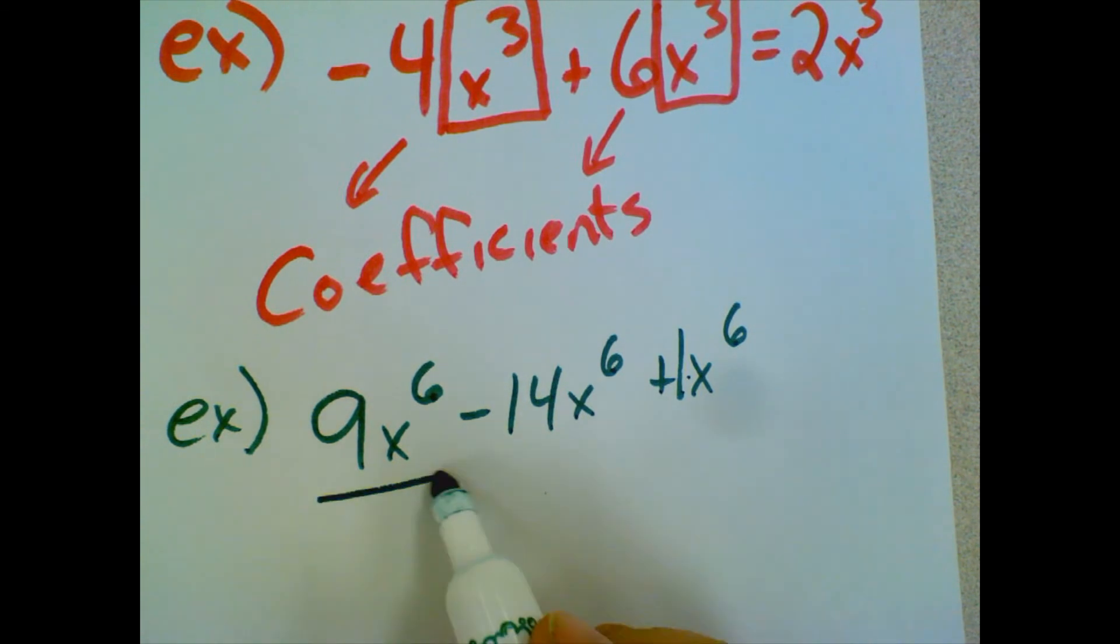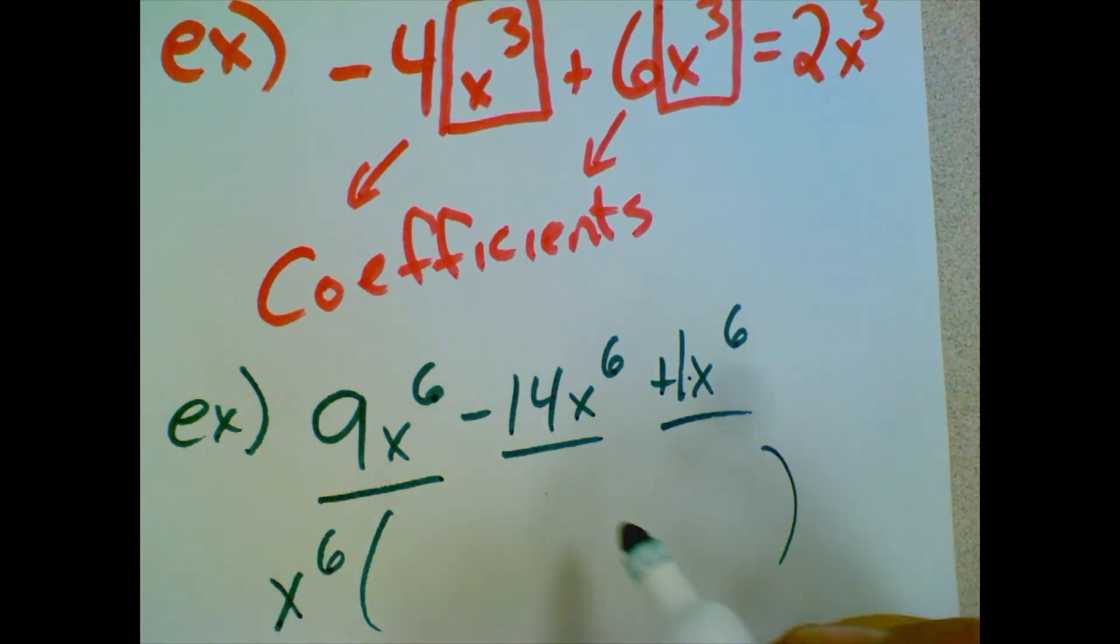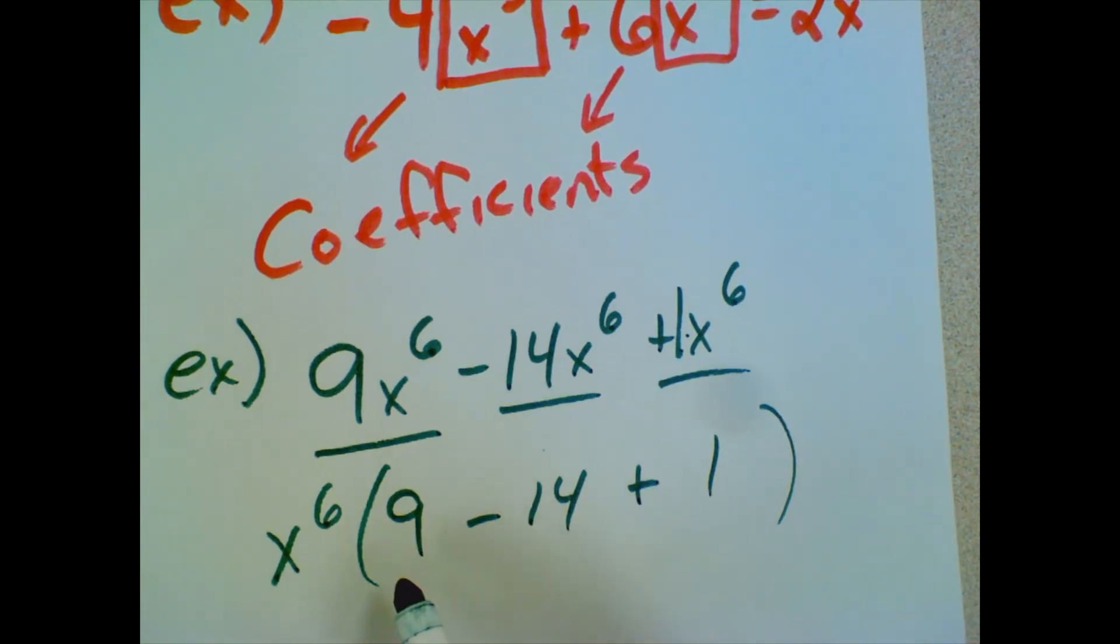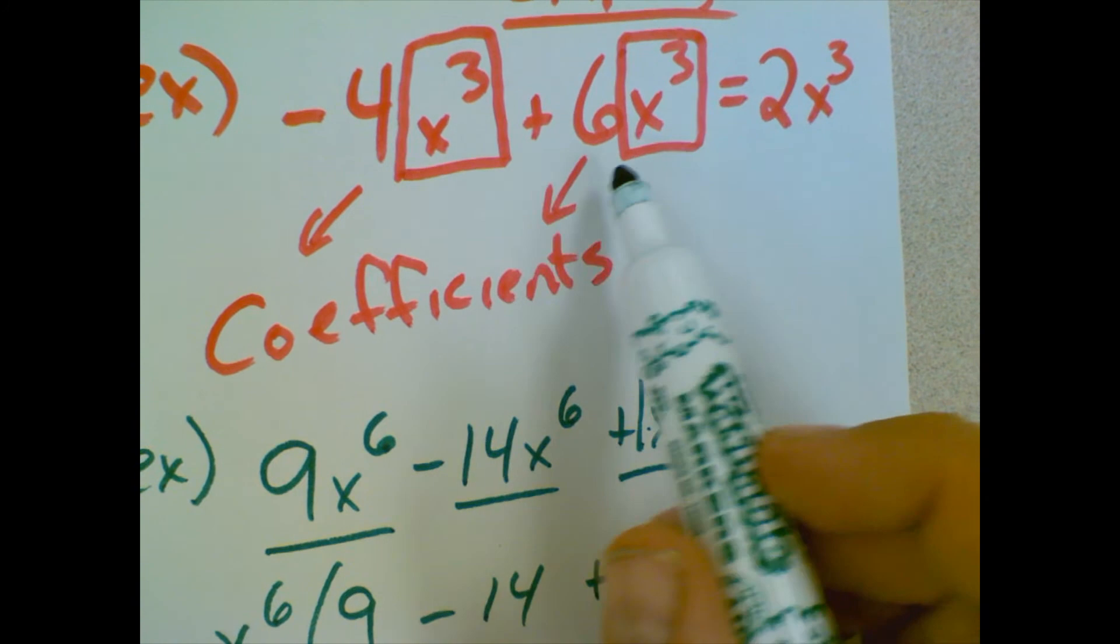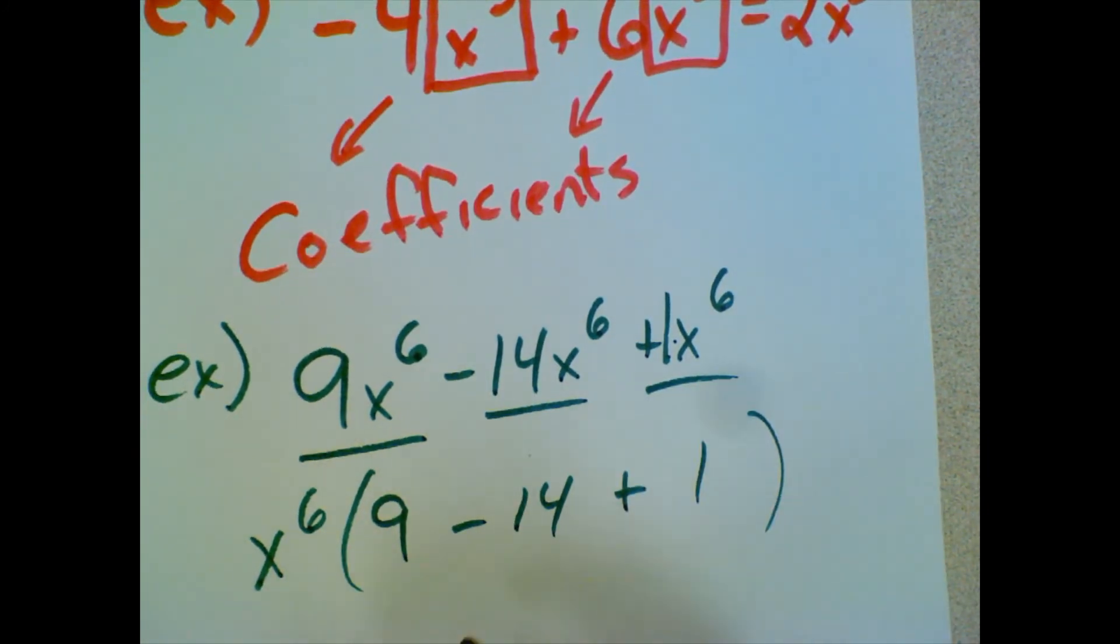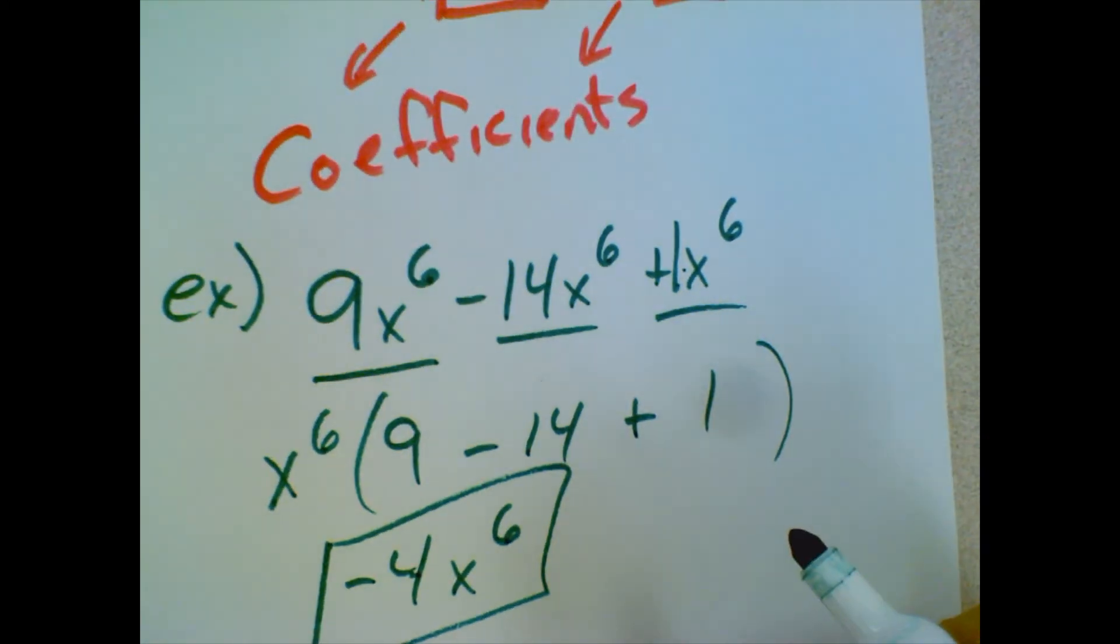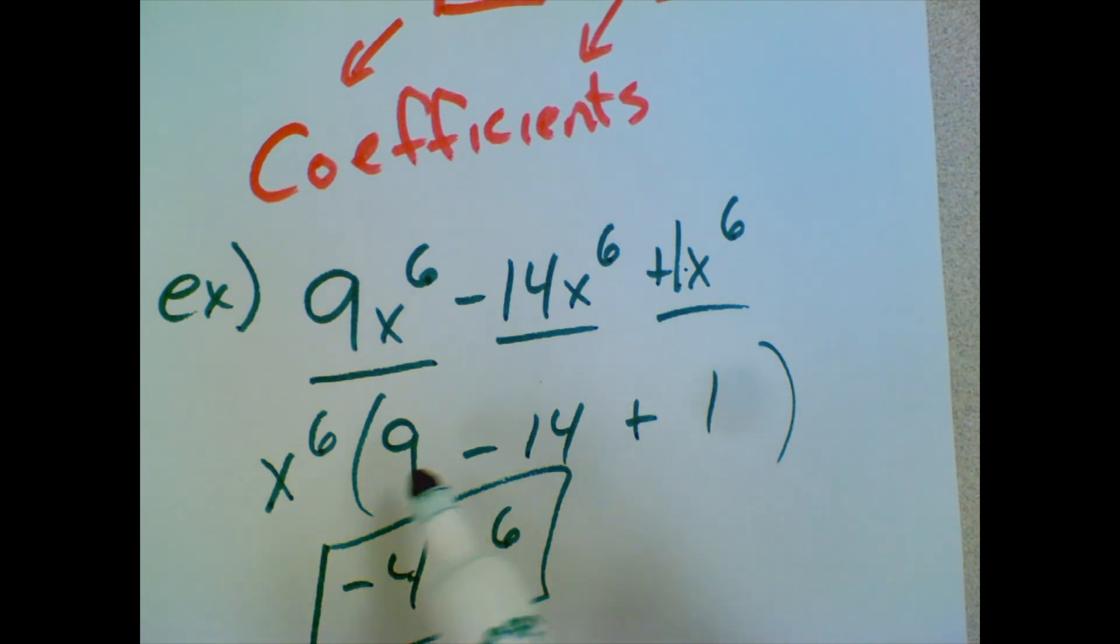Remember we did greatest common factors. If you look at this term, this term, and this term, they all have a greatest common factor of x to the 6th. So we pull that out front. In this term, we still have a 9 left over. In this term, we have the minus 14. And in this term, we have the 1. So here's another way you can justify why combining like terms work. Essentially, you're pulling out the greatest common factor. And we could have done the same thing up here with the x cubes. And if you do what's in parentheses first, you'll get negative 5 plus 1, which is negative 4. So we get negative 4x to the 6th.